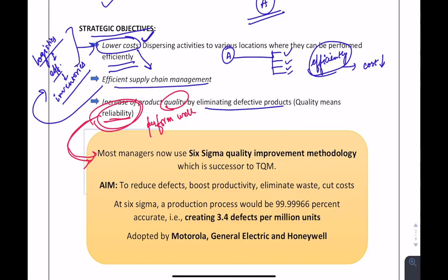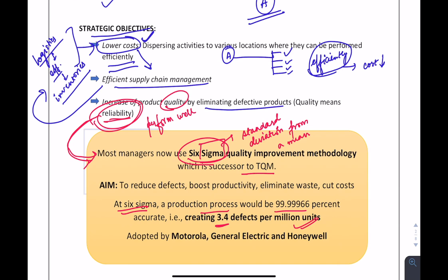To improve or enhance this reliability and quality, managers use Six Sigma, which is a successor of Total Quality Management. Sigma represents standard deviation from a mean — the higher the number of Sigmas, the fewer the errors. In Six Sigma, the production process is 99.99966% accurate, meaning only 3.4 defects per million units. This is very difficult, almost impossible, for a company to achieve such perfection. Six Sigma has been adopted by Motorola, General Electric, and Honeywell.